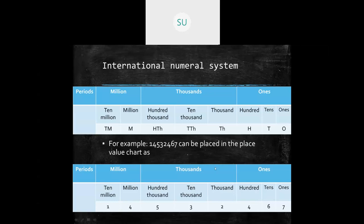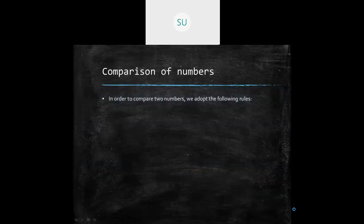We place the digits from the ones place: seven in ones, six in tens, four in hundreds, two in thousands, three in ten thousands, five in hundred thousands, four in millions, and one in ten millions. The number is read as fourteen million, five hundred and thirty-two thousand, four hundred and sixty-seven.